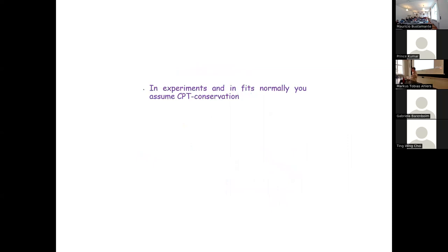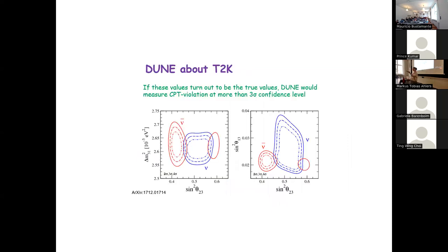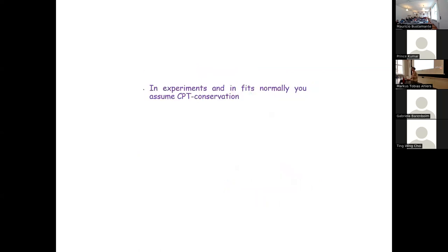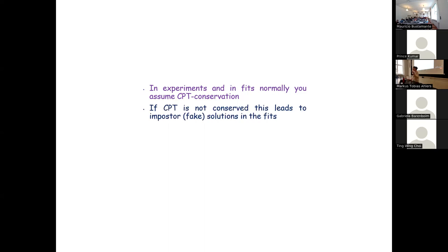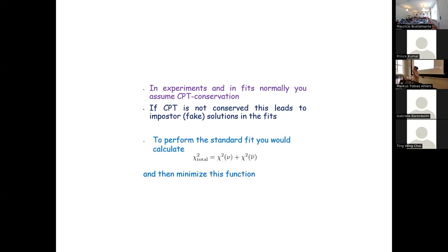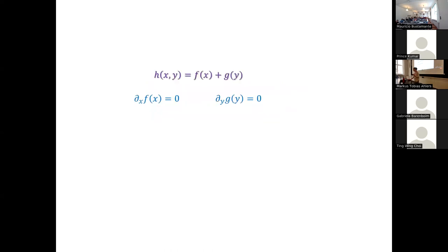What normally happens in neutrino experiments is that you have one signal in antineutrinos and one in neutrinos. In order to get better bounds on the mixing parameters — to extract the mass difference or mixing angles with smaller error bars — you assume CPT is conserved, that neutrinos and antineutrinos are driven by the same parameters. And you can get what are called impostor solutions. This is extremely, extremely dangerous.